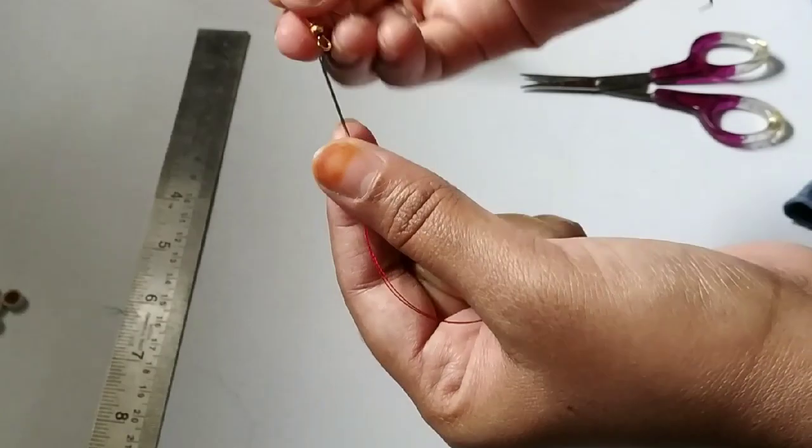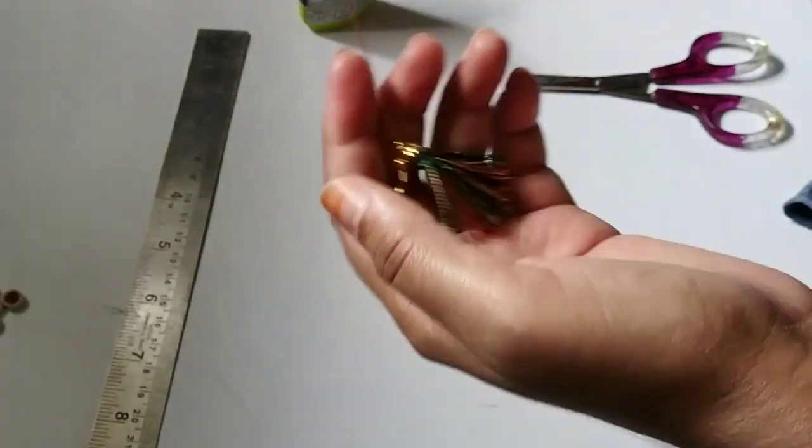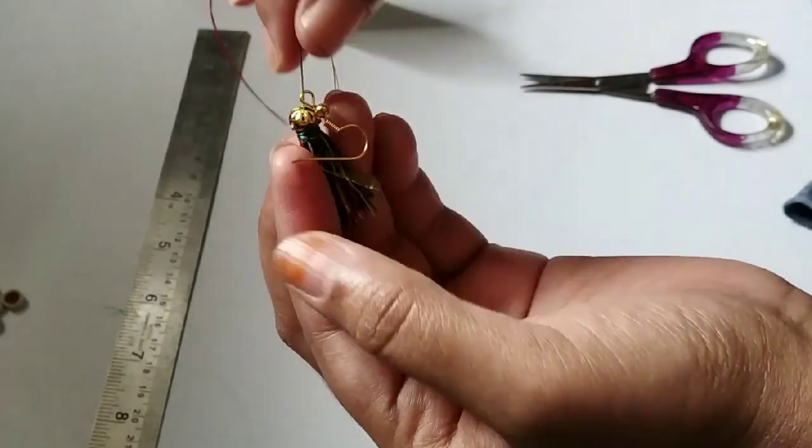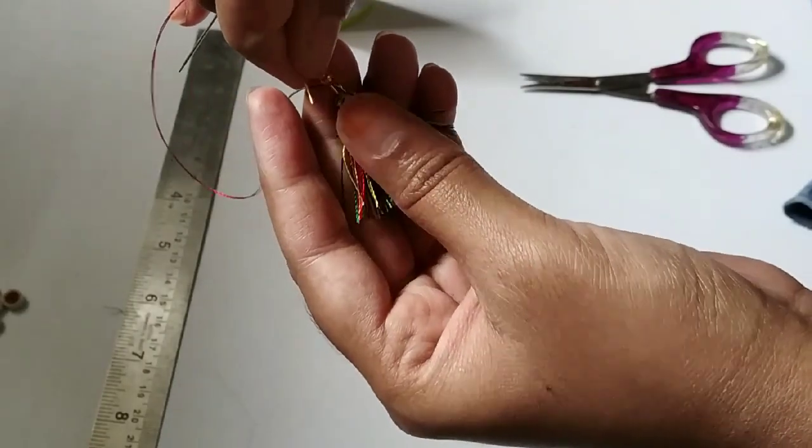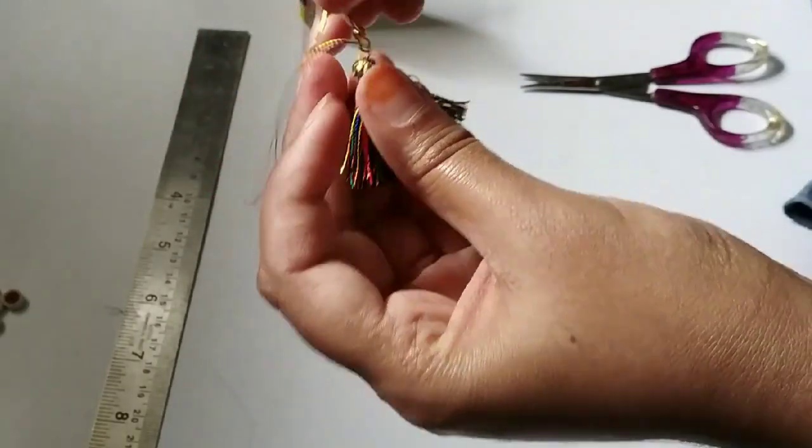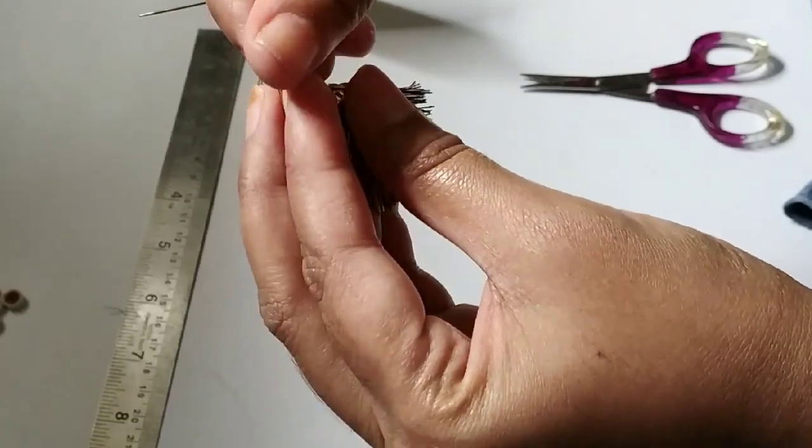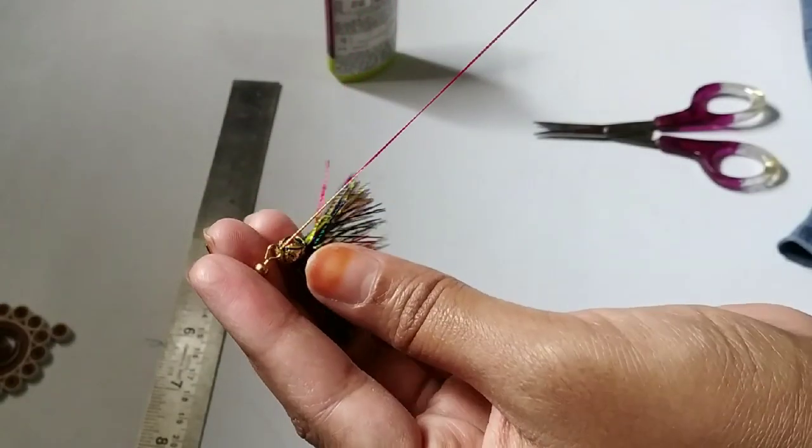So I am taking an ear hook. Now we need to just tie the knot on both sides. That's it. So here I am tying the knot on both sides.